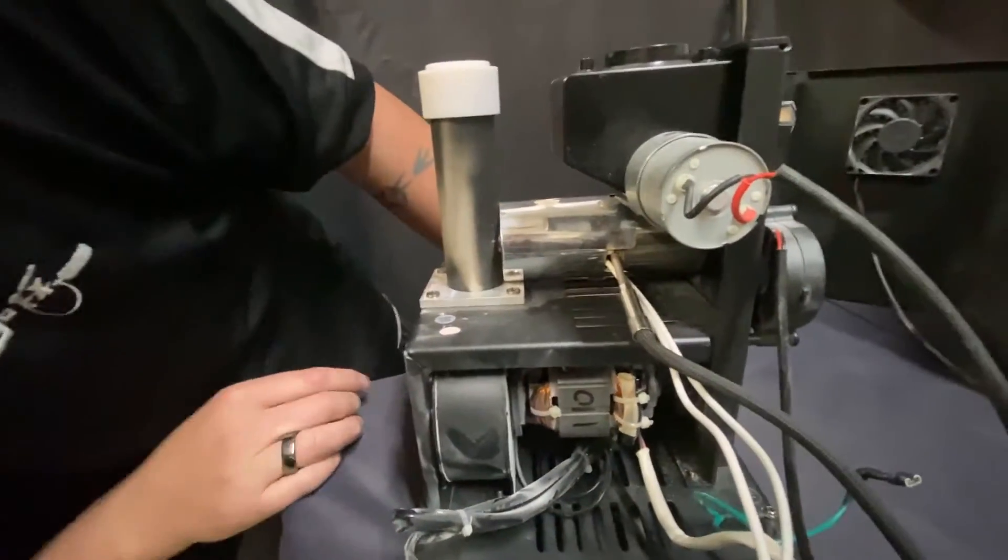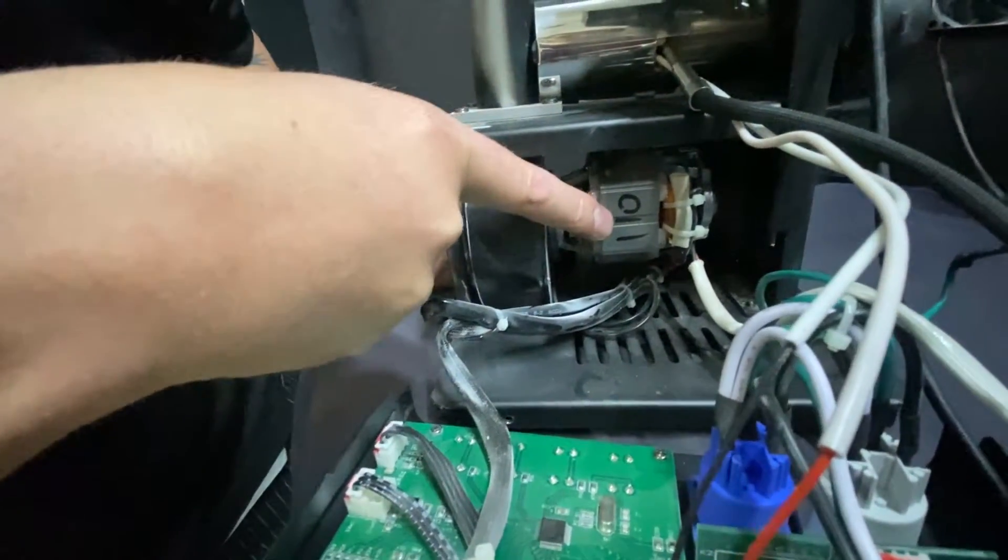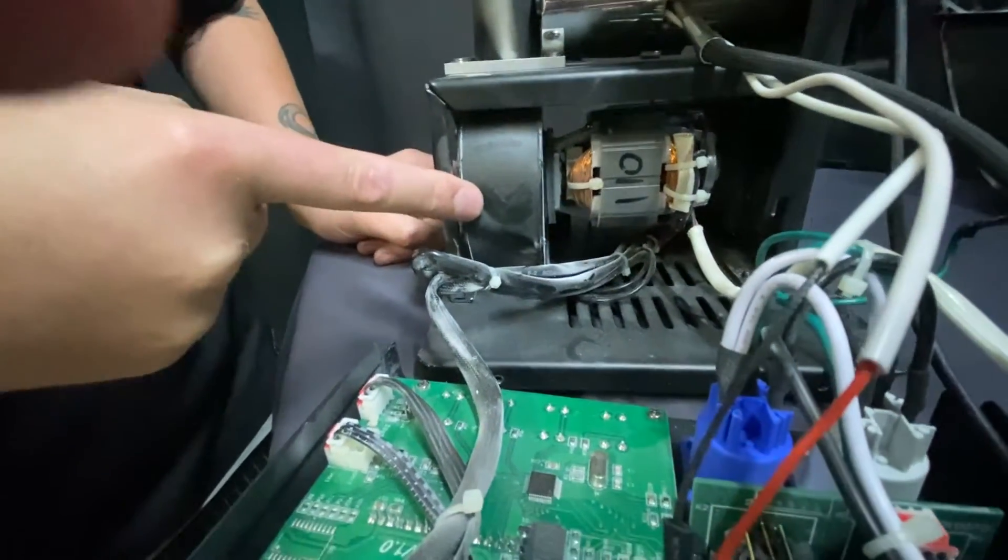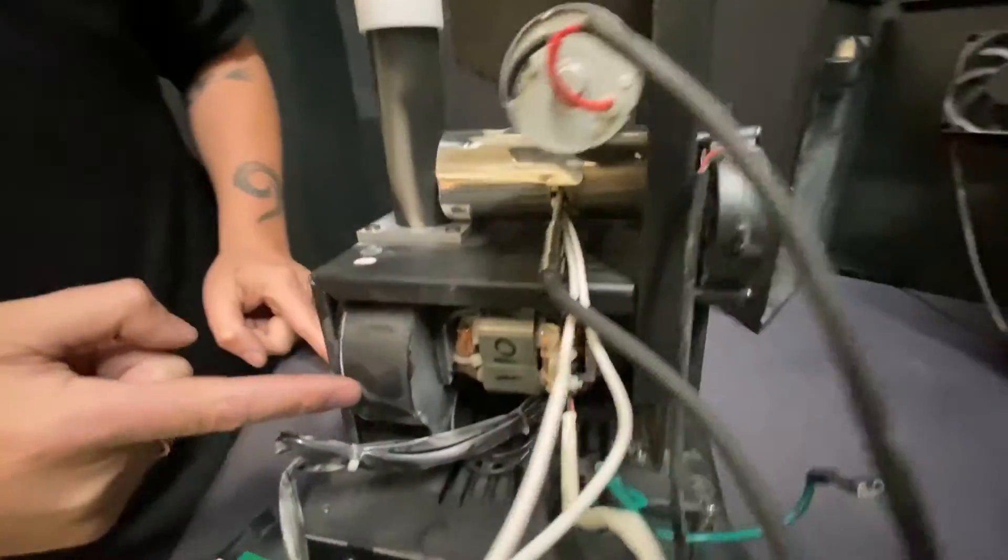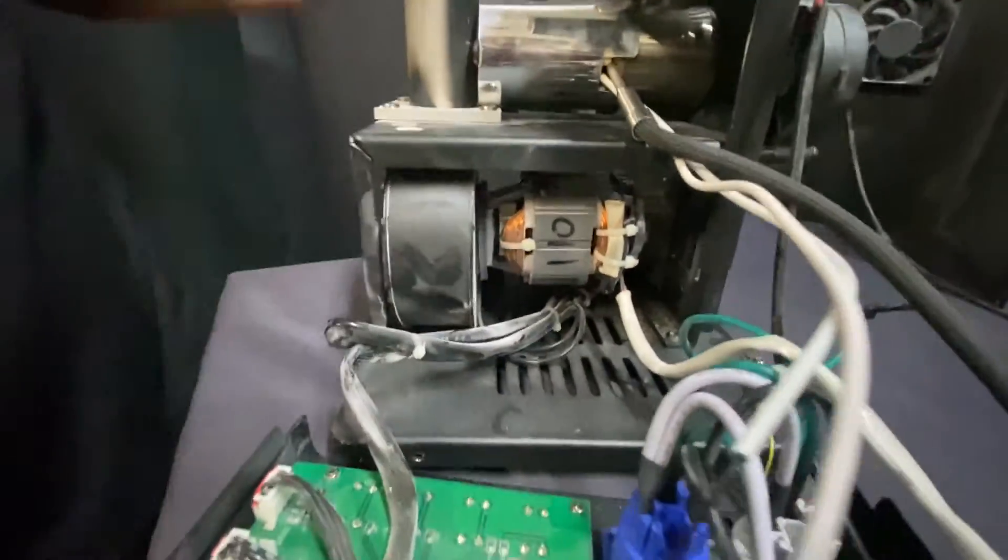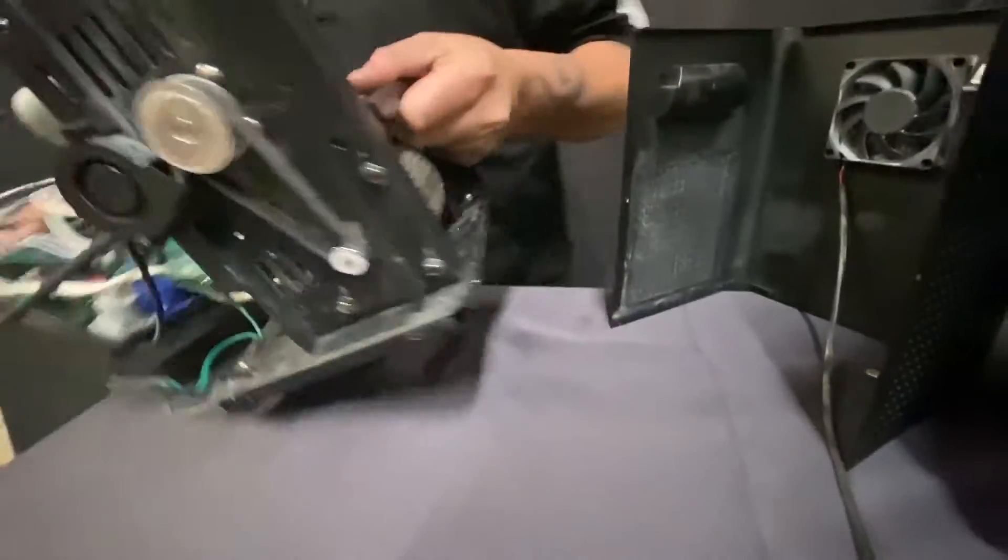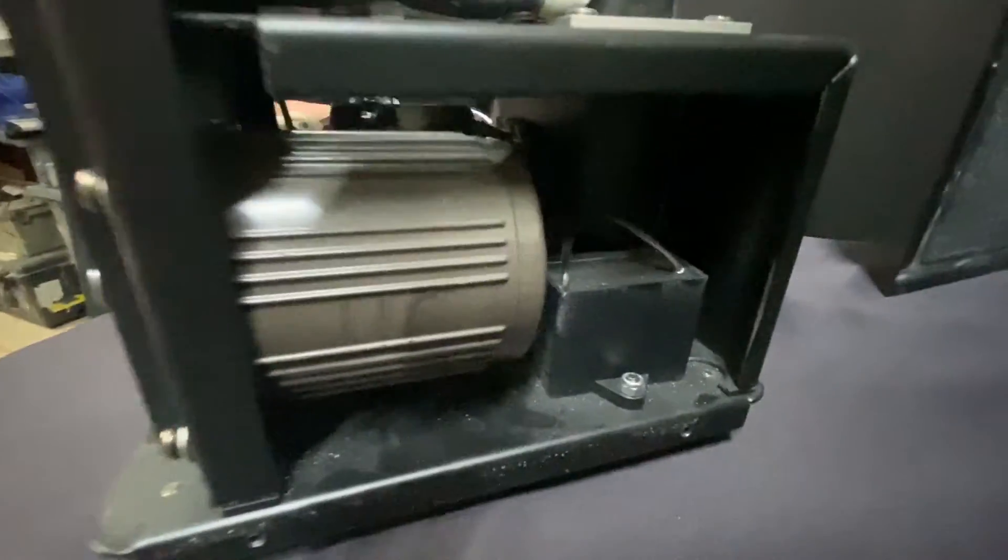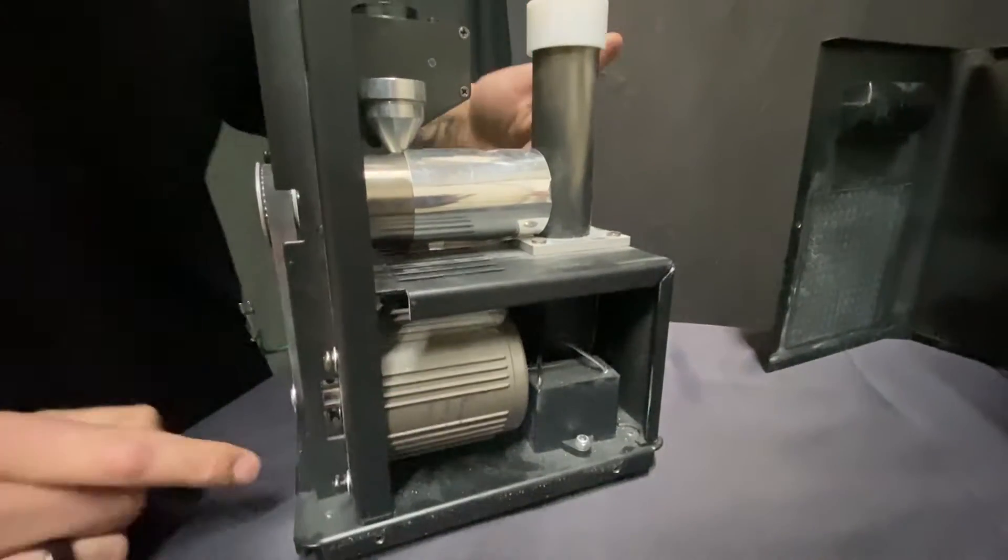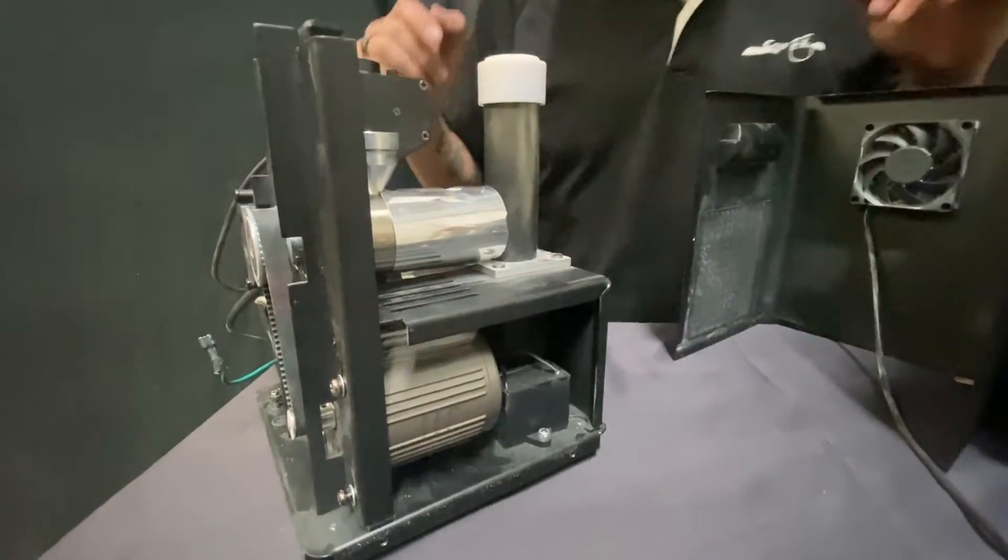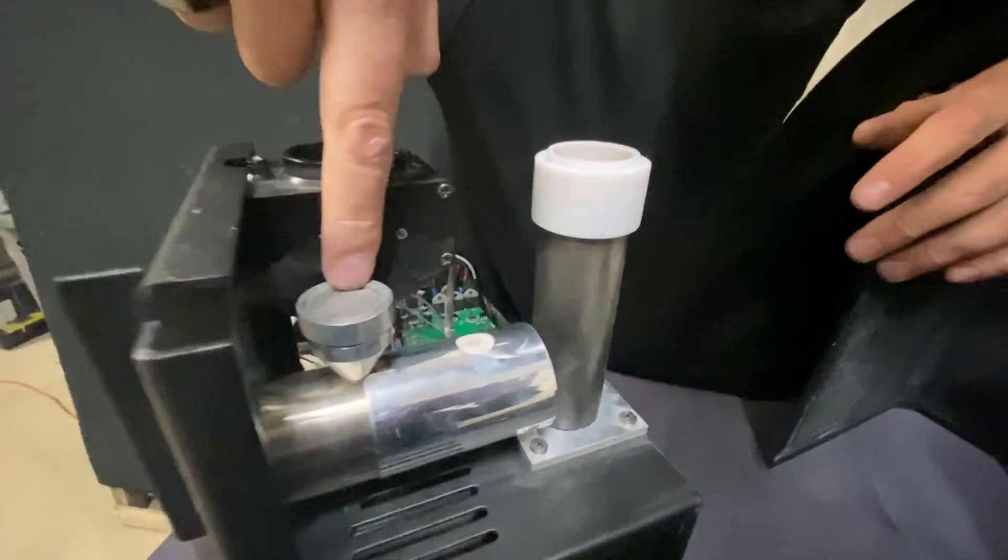You can see the motor down here. Actually, I apologize - this motor is for the fan. This fan itself is the same fan that's down here, just this fan is bigger. The motor itself, let me flip this machine around so you can see it, is back here. The motor is right here and that's what drives the entire machine.